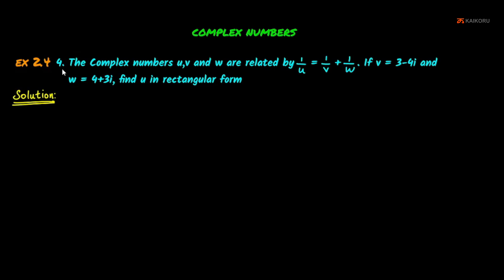Complex Numbers Exercise 2.4, Fourth Question. Our question involves complex numbers U, V, and W, which are related by 1/U = 1/V + 1/W. Given that V equals 3 minus 4i and W equals 4 plus 3i, find U in rectangular form.